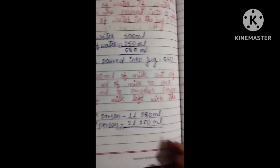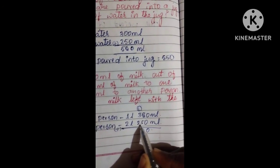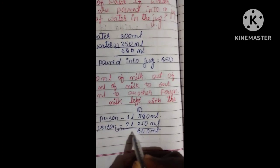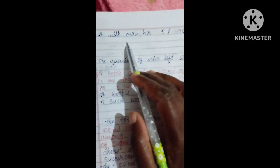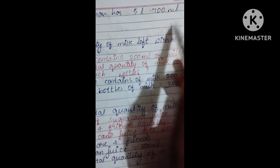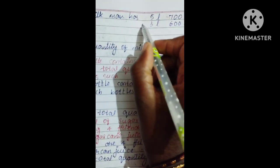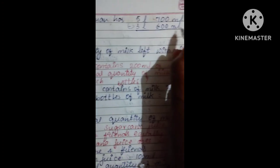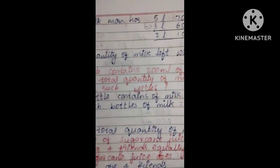So to one person he sells 1 liter 350 ml. Now how much does he sell? Five liters 700 ml. He sells to two persons 3 liters 600 milliliters. You can find how much is left with him. By doing the subtraction, the quantity of milk left with the milkman is 2 liters 100 milliliters.